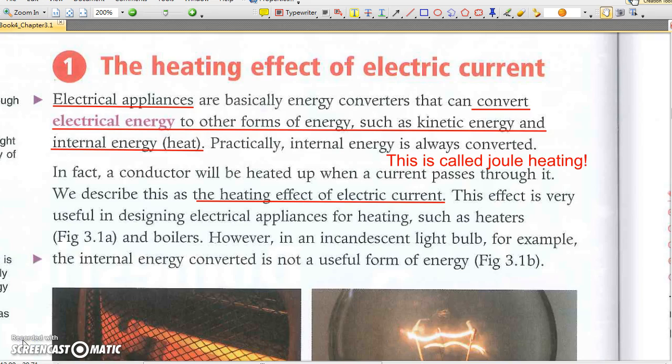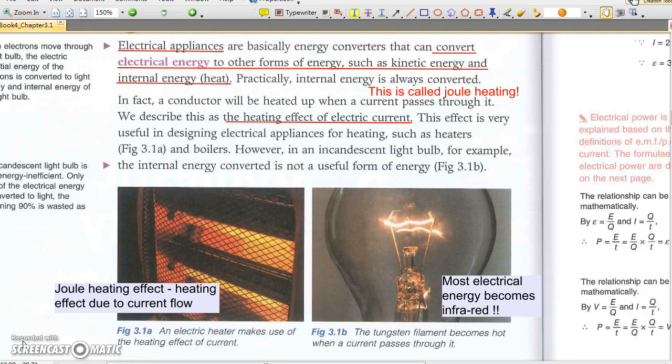Electrical appliances are energy converters. They convert electrical energy to other forms, which almost always include internal energy, heat. The current delivered by a voltage source carries electrical potential energy. When current flows through a circuit, the electrical energy is converted to other forms. Current flows through a resistor always produce internal energy, or simply heat energy. This is called Joule heating effect.